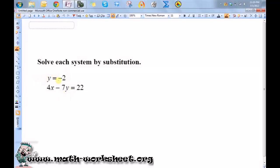Well, in this case, one of our equations is already solved for us. So we already know that in our ordered pair solution, the second coordinate is going to need to be negative 2.